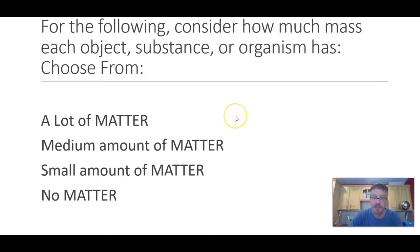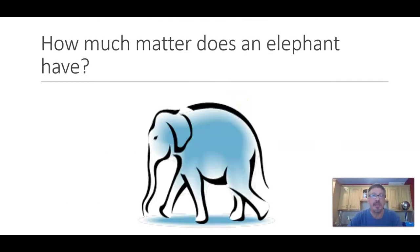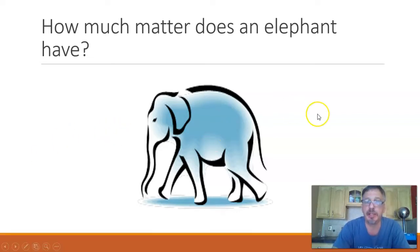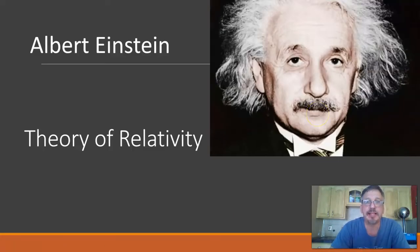Let's look at the first object — we actually have an organism: an elephant. Write the word elephant in your journal and next to it, does it have a lot of matter, a medium amount, a small amount, or no matter? Put some justification for why you say what you said. Okay, so what did you think about the elephant? Well, before we answer that question, let's talk about Albert Einstein. Einstein had something called the theory of relativity, and the answer depends on what you're comparing it to.